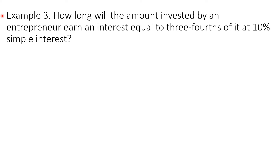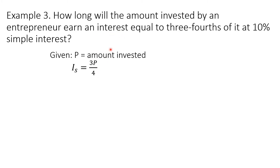Example 3: How long will an amount invested by an entrepreneur earn an interest equal to 3/4 of itself at 10% simple interest? Let P be the amount invested. Since the interest is 3/4 of the original amount, I sub S equals 3P over 4. The simple interest rate is 10%, or 0.10 in decimals, and we are asked to solve for the value of T.